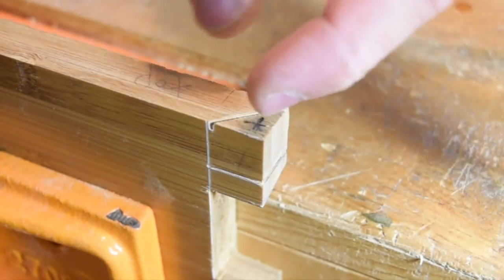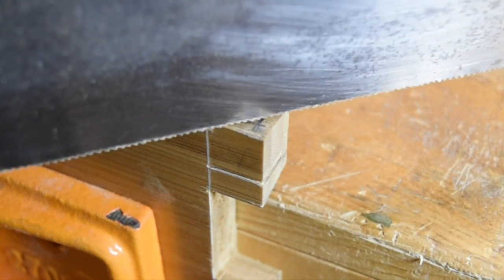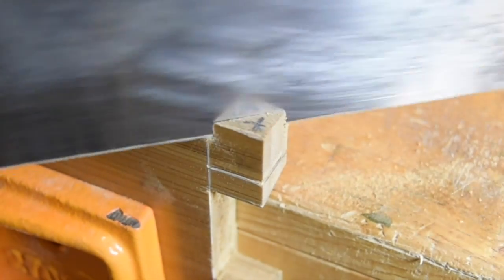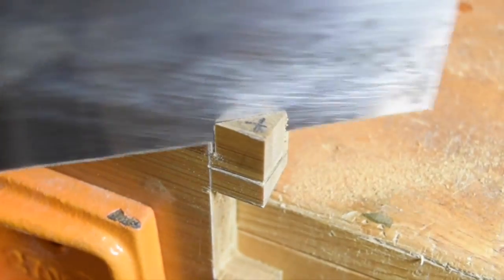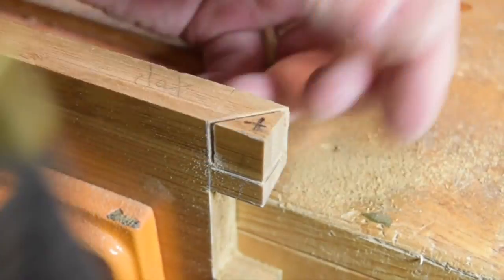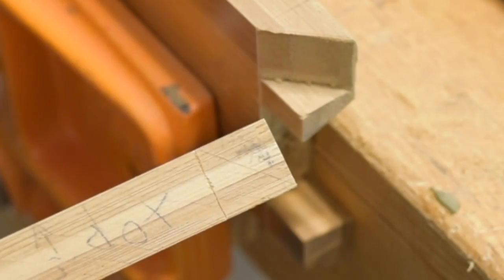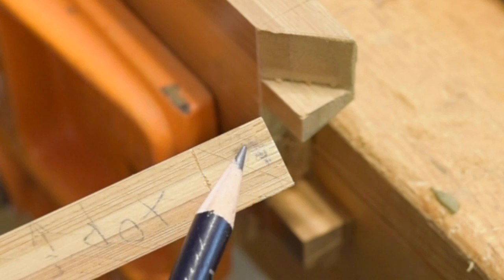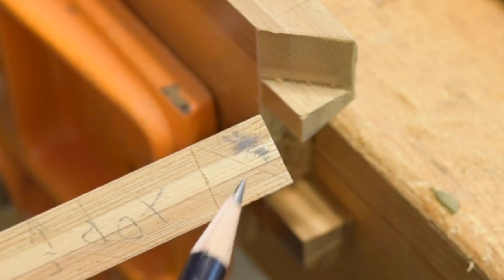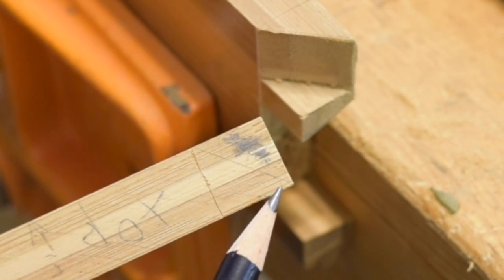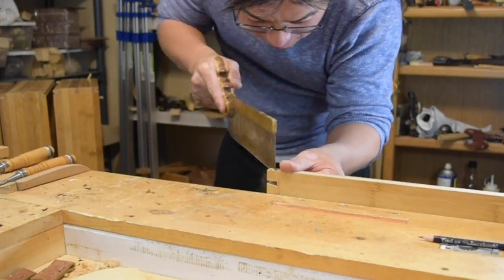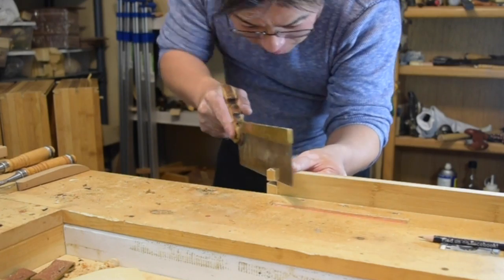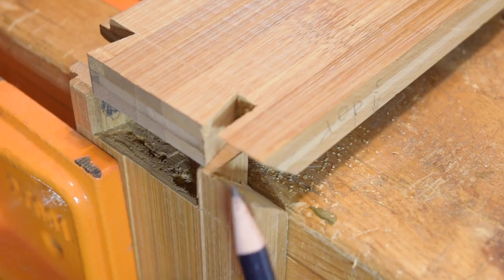Now I'm going to cut the miter of the opposite matching face, making sure that I cut on the waste side of this line, this gauge line here.